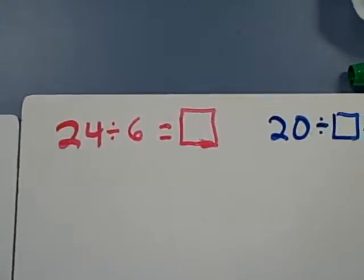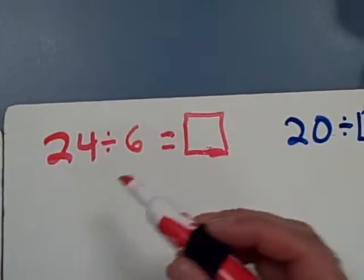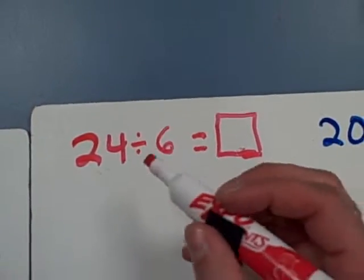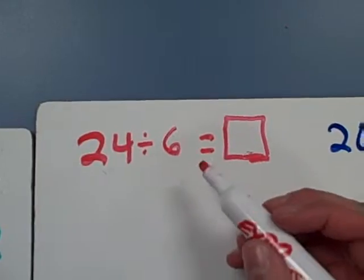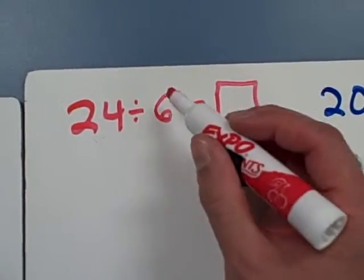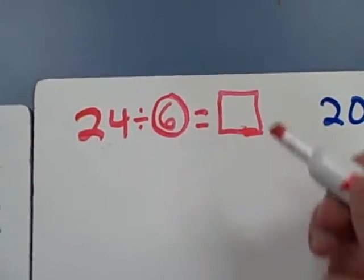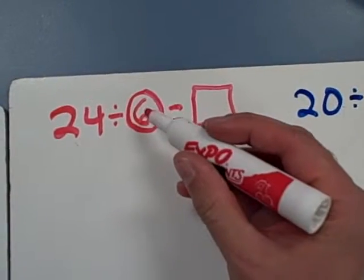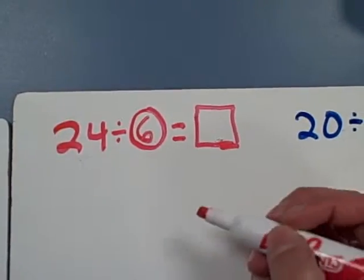Let's take a look at division now. 24 divided by six. 24 divided by six is really just saying my dividend, which is 24 divided into groups of six. So how many groups of six does it take to make 24?